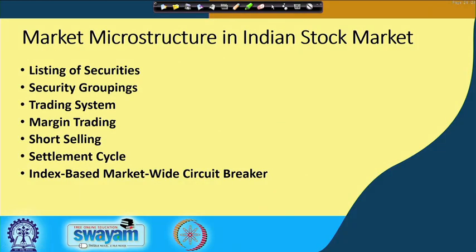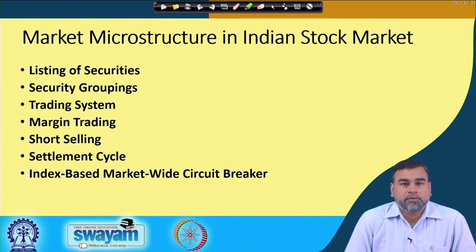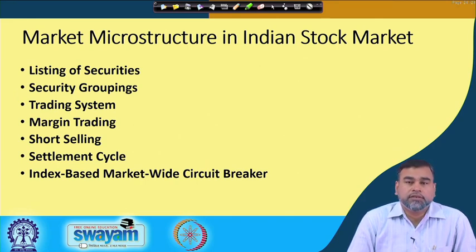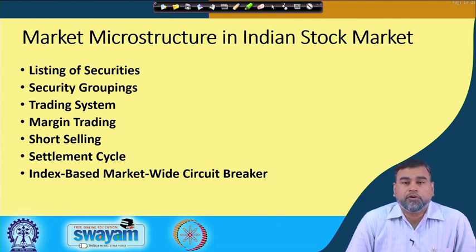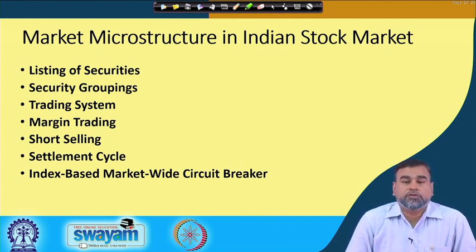The issues that broadly come under market microstructure are: first, the listing of securities; security groupings; trading system; margin trading; short selling; the settlement cycle; and finally, one of the ways the market can be controlled, which is the index-based market-wide circuit breaker. These are the different points that come under the market microstructure of the stock market in general, or in India in particular.